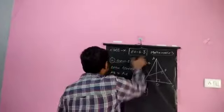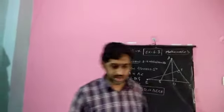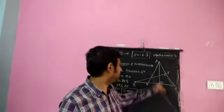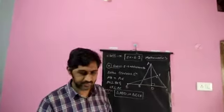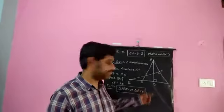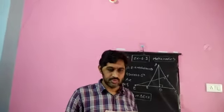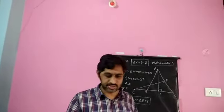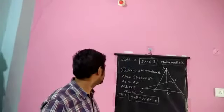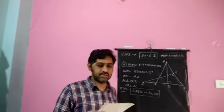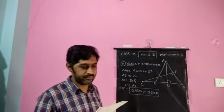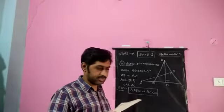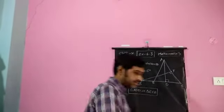Last time, mathematics exercise 6.3, question 11. In figure 6.40, E is a point on the side CB produced of an isosceles triangle ABC, in which AB equals AC. If AD is perpendicular to BC and EF is perpendicular to AC, prove that triangle ABD is similar to triangle ECF.